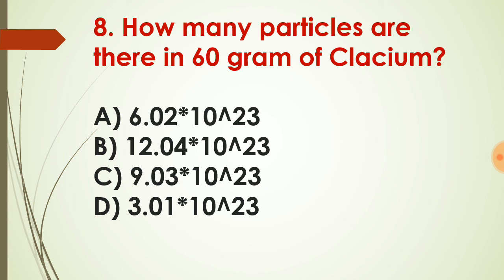Question number eight: how many particles are there in 60 grams of calcium? This question is from the mole concept. The atomic mass of calcium is 40 grams. If we express the atomic mass of a substance in grams, that is equal to 6.02 × 10²³ number of molecules. Calcium has 20 protons and 20 neutrons, so its atomic mass is 40 grams. Therefore, 40 grams equals 6.023 × 10²³ particles. Use the unitary method for 1 gram and then find the value for 60 grams.